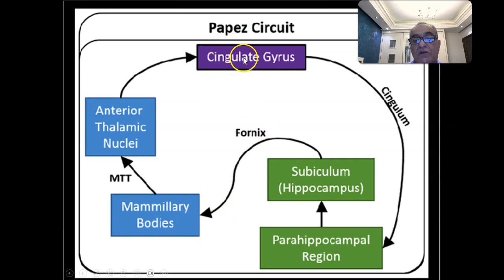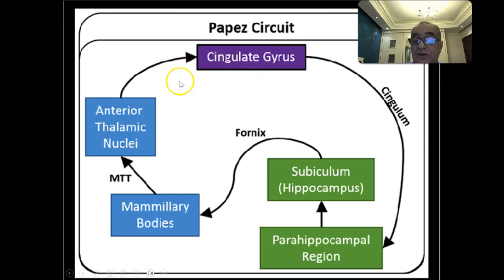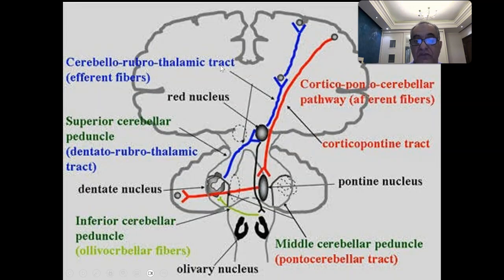Let's recall the circle of Papez: starting from the cingulate gyrus, then through the deep structure called the cingulum, going to the parahippocampal region and the hippocampus. Then via the fornix to the mammillary body, then via the mammillothalamic tract to the anterior thalamic nuclei, and from the anterior thalamic nuclei back to the cingulate gyrus — through the anterior limb of the internal capsule — what we call the anterior thalamic fibers.